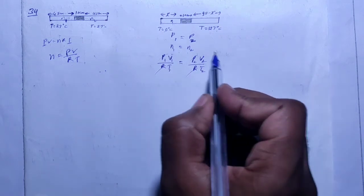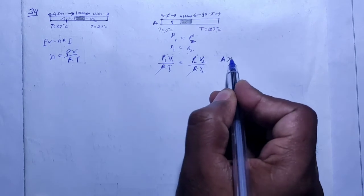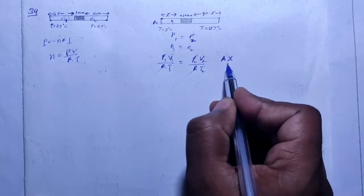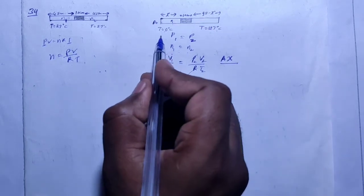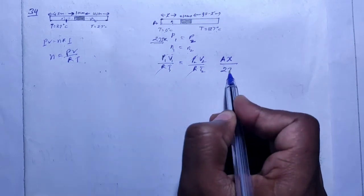Volume, how much is it? The volume is the area of cross-section times length. So what is the volume here? A into X, right? And what is the temperature here? 0 degrees Celsius, 273 Kelvin, right? So this is 273 Kelvin.